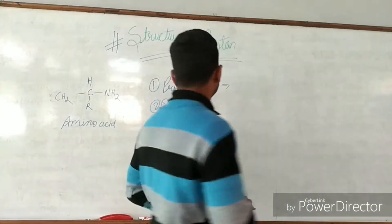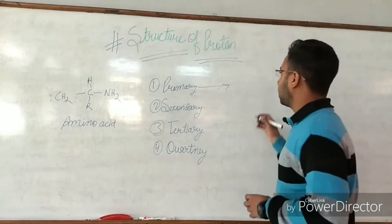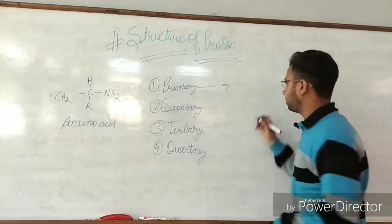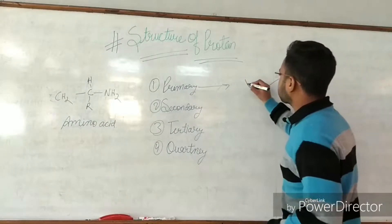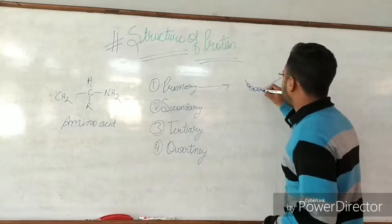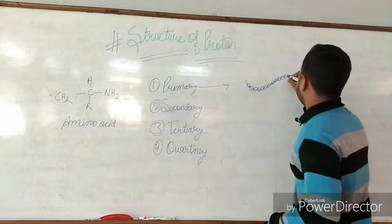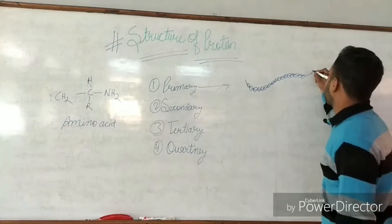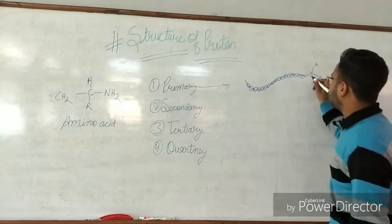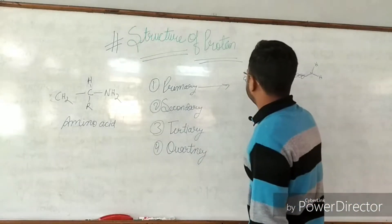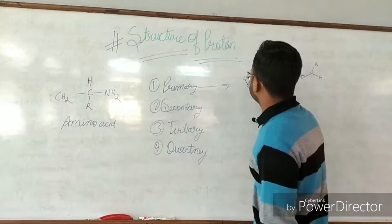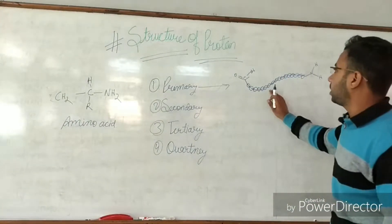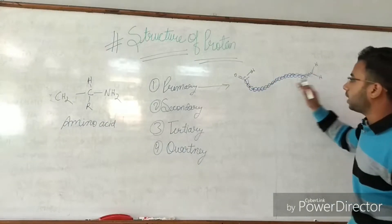Now talking about the primary structure. Primary structure is the linear chain of amino acids — it means no 2D or 3D folding, just a linear chain. There is an N-terminal (nitrogenous terminal) and a C-terminal. Each circle in the diagram represents an amino acid, and all the dots represent amino acids between them.